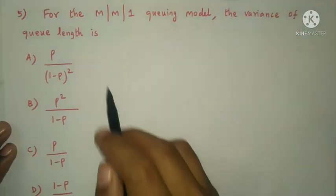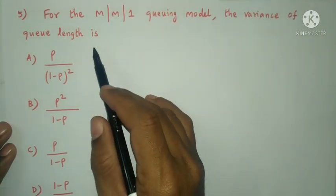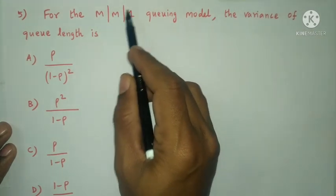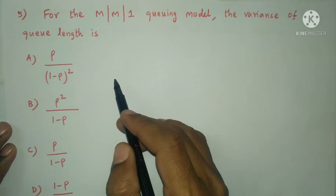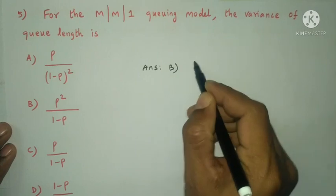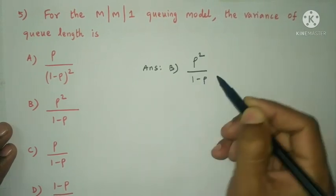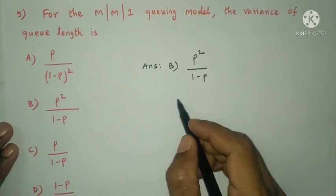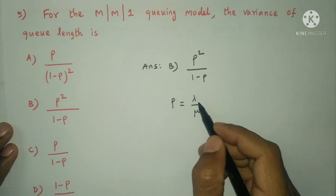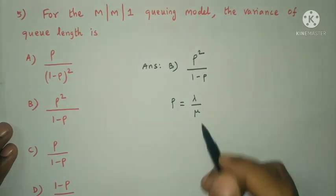Next question: For the M/M/1 queuing model, the variance of the queue length is rho squared divided by (1 minus rho), where rho equal to lambda by mu. Here lambda is the arrival rate and mu is the service rate. The answer is option B.